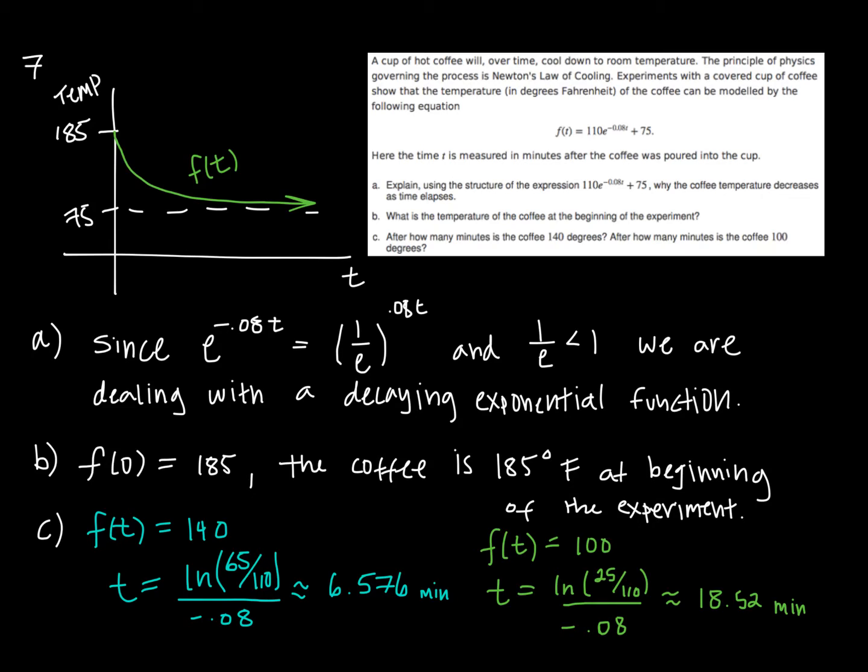Explaining how the structure shows me that the coffee is decreasing in temperature is simply looking at the exponential expression. We have e to the negative 0.08 t. And remember, we can rewrite this as 1 over e to the 0.08 t. And since this base is now less than 1, we know that we will be dealing with a decaying exponential model. The temperature at the beginning of the experiment, quite simple. Evaluating f at 0 is 185. So I have a temperature of 185 degrees Fahrenheit. And then determining the number of minutes for the coffee to reach two different temperatures has been done here. And I'm simply setting f of t equal to those values, setting the temperature equal to 140 and 100, and solving as I have here.